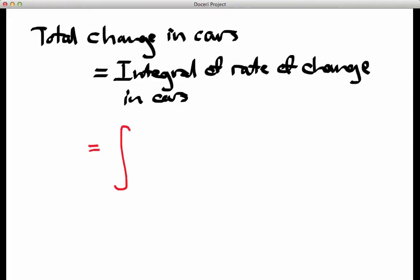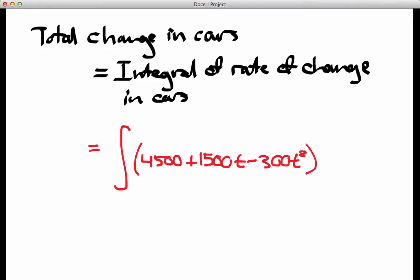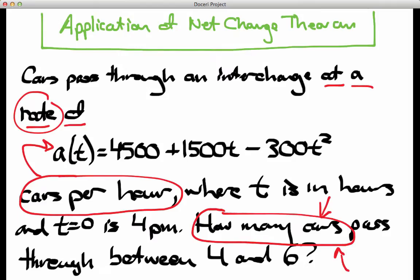I'm drawing the integral sign here, and I'm going to put the expression that I know represents the rate of change, 4,500 plus 1,500t minus 300t². I know this is a rate of change because over on the problem data, it says the cars are passing through at a rate of, and that word rate, of course, is huge. And so this is telling me a rate of change as measured in cars per hour. I'm going to need to put a dt here, and now what are the limits of integration? Well, let's look back at the problem data again, and it says how many cars pass through the interchange between the hours of 4 o'clock and 6 o'clock. So I'm given a time interval here.